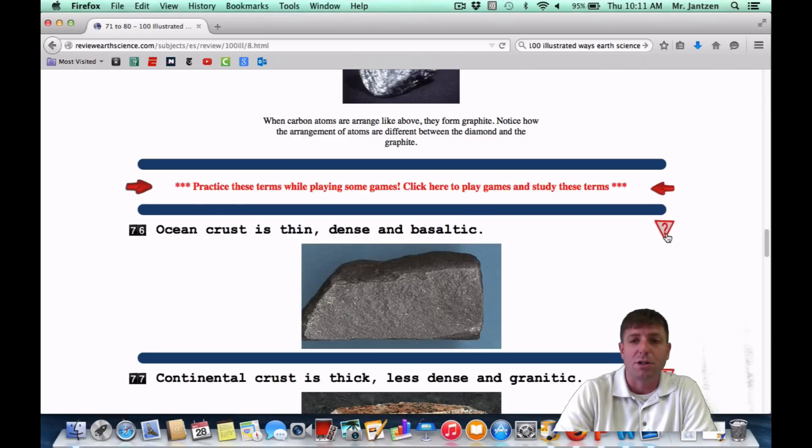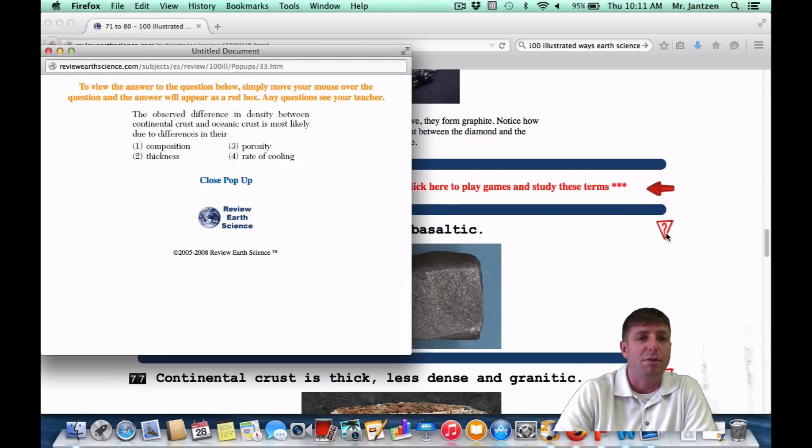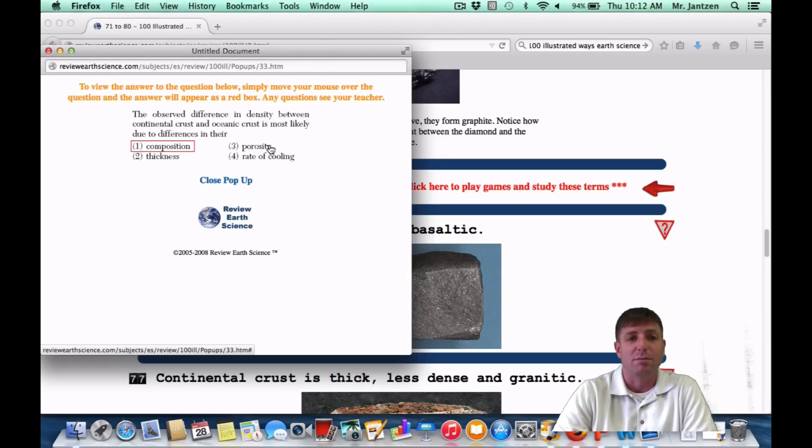Once again, if we are going to see this as a Regents question, it may appear something like this. The observed difference in density between the continental crust and oceanic crust is most likely due to their differences in what? So once again, what's causing their differences? And once again, we're talking about the composition. We're talking about whether it's granite or whether it's basalt.